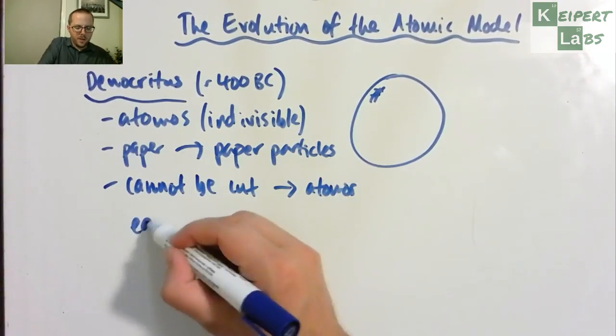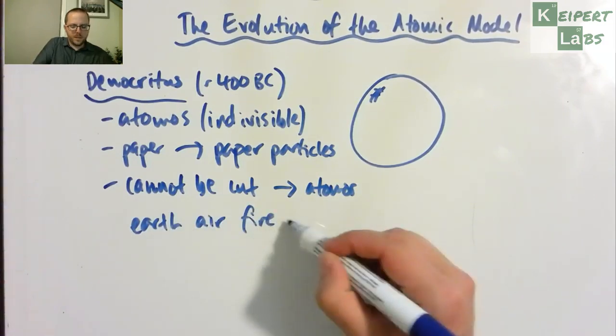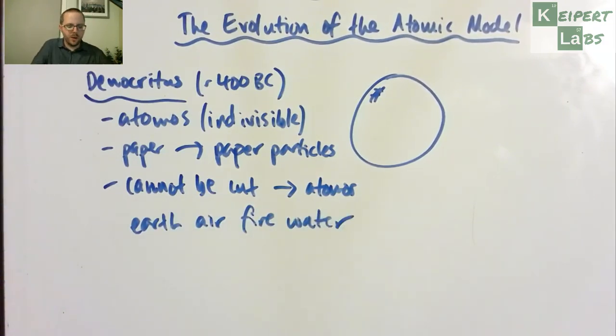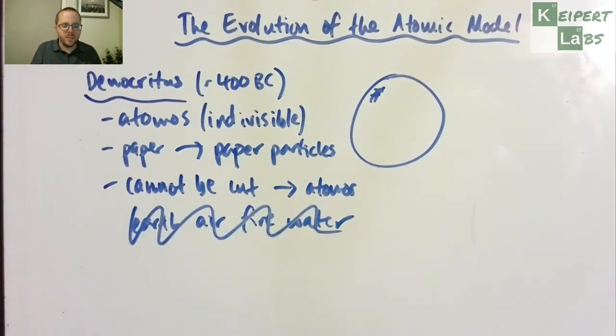So he took this concept of the four elements, the makeup of matter being earth, air, fire, and water, and decided that and proposed this idea that that was no longer logical. Unfortunately, some of the other philosophers of his day were more famous and more powerful and well regarded, and they didn't like his idea, and so Democritus' idea didn't take hold.